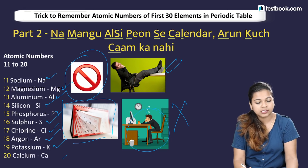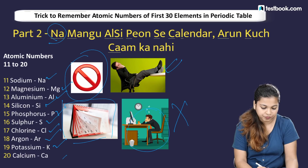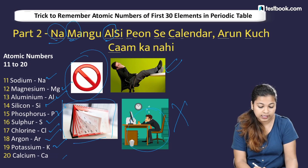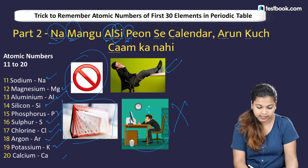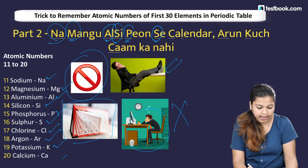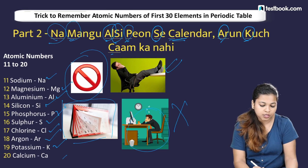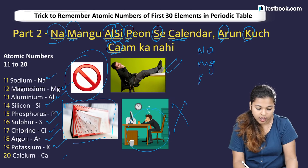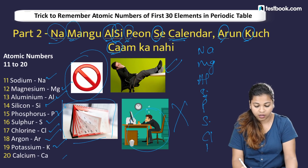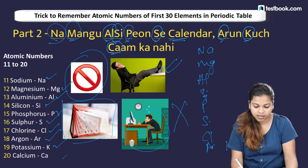Breaking down the sentence: Na = sodium (atomic number 11), Mg (maangu) = magnesium (12), Al = aluminium (13), Si (Al-Si) = silicon (14), P (pyoon) = phosphorus (15), S (sulfur) = 16, CL (calendar) = chlorine (17), AR (Arun) = argon (18), K (kuch) = potassium (19), CA (kaam) = calcium (20).